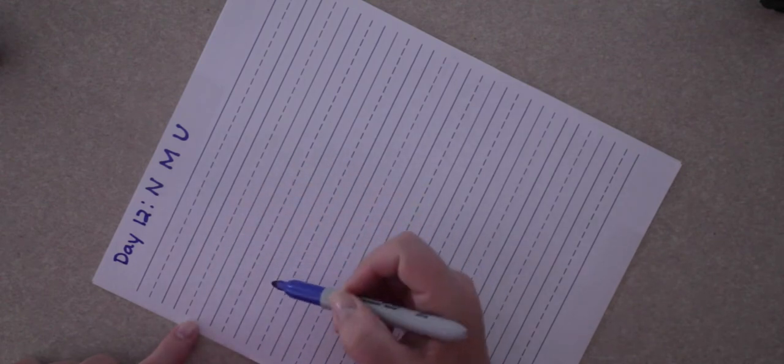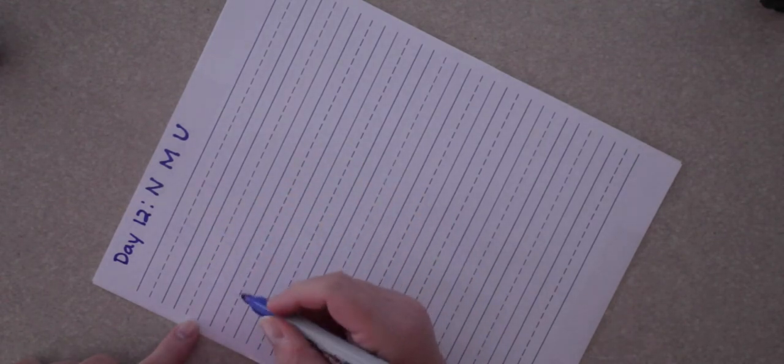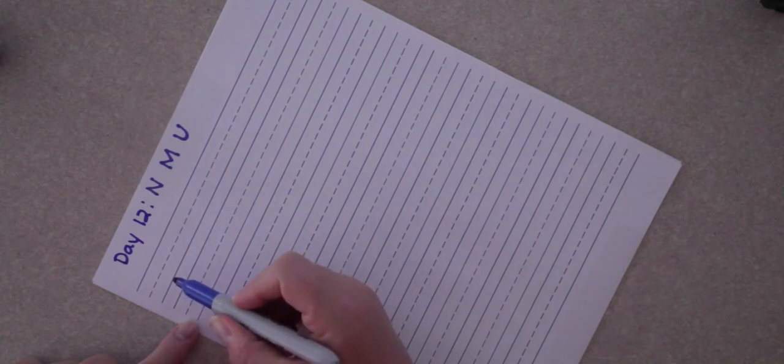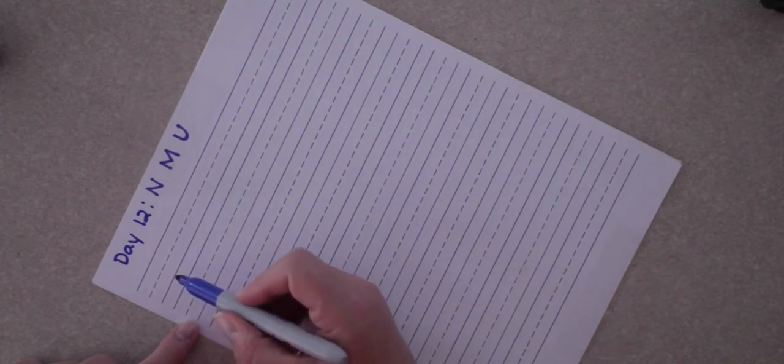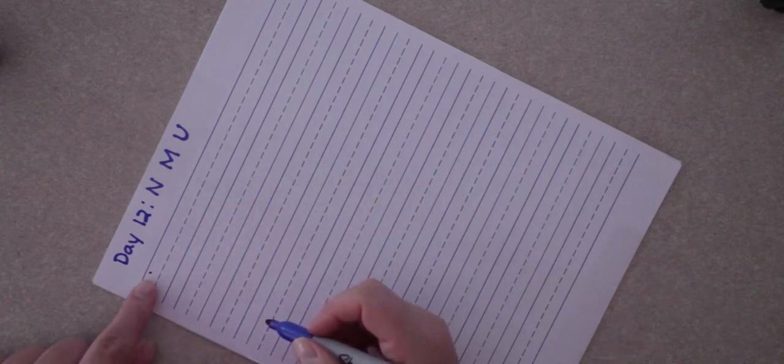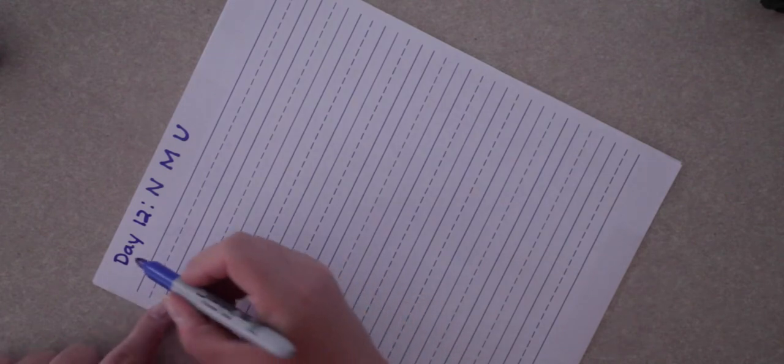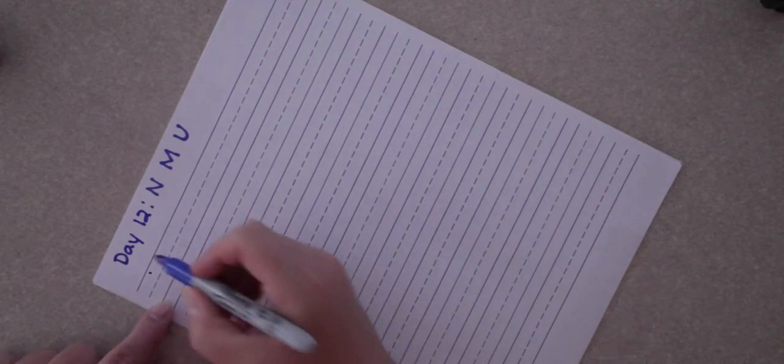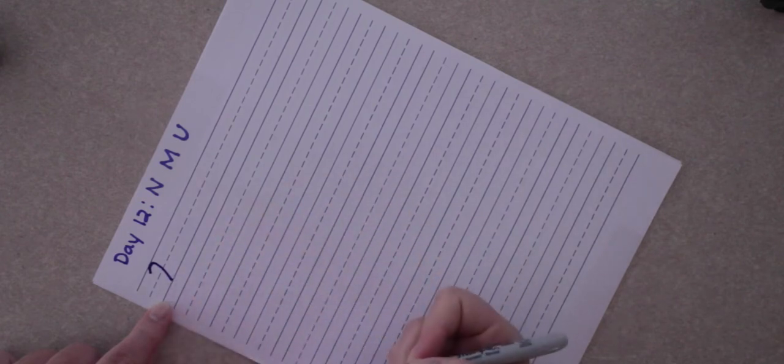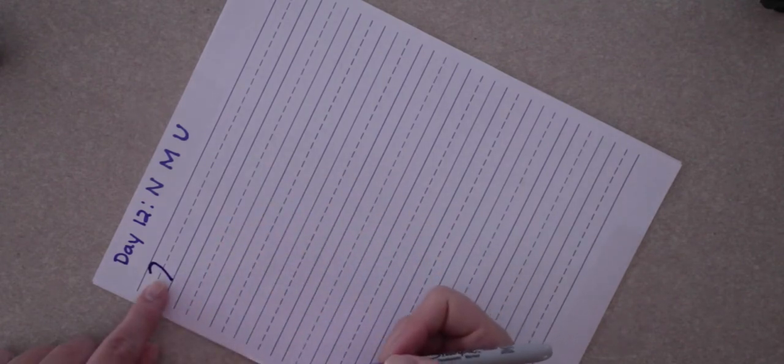An N in print looks like this. The N in cursive is just a little bit different. Yesterday when we made our H, X, and W, we learned that you start just a little bit below the top line with those letters, and you do the same thing with this capital N. Just a little bit below the top line, and you're going to make that candy cane again, just like we did when we made the capital H.